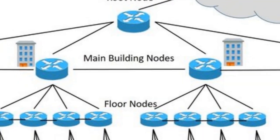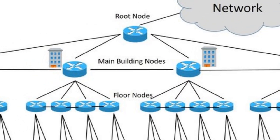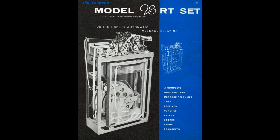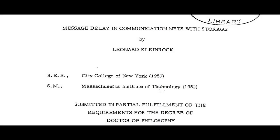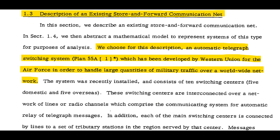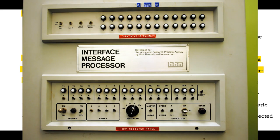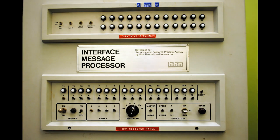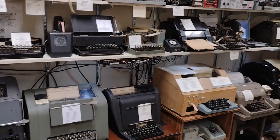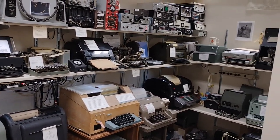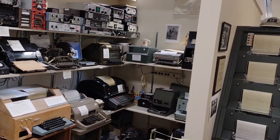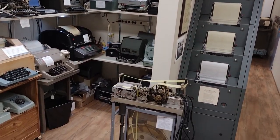Today's Layer 2 switching and Layer 3 routing has come a long way since these teletype systems of the 1950s, but the 28RT played a critical role in the development of modern store-and-forward messaging systems like the Internet. In fact, Leonard Kleinrock's doctoral thesis at the Massachusetts Institute of Technology in 1962 analyzed queuing delays in the Air Force Plan 55A teletype switching system, and Kleinrock's mathematical work influenced the development of the early ARPANET. The Antique Wireless Museum in Bloomfield, New York, has a large display of teletype equipment, including a Model 28RT.